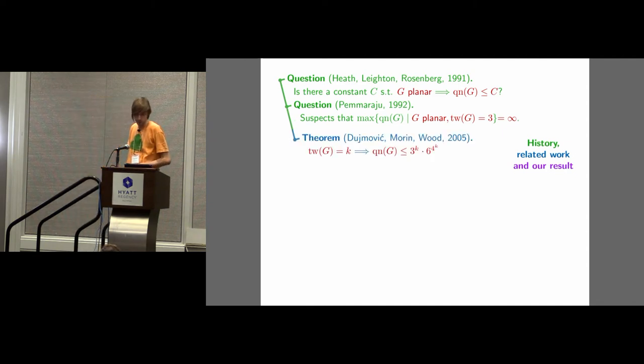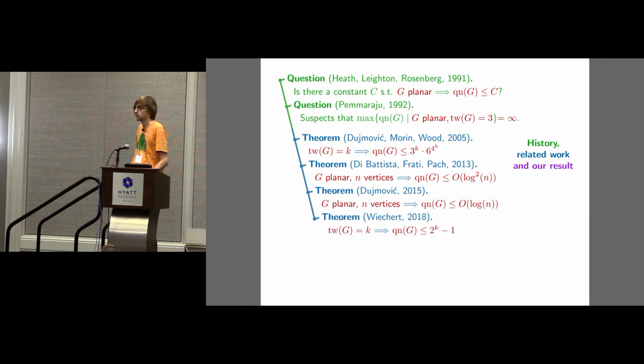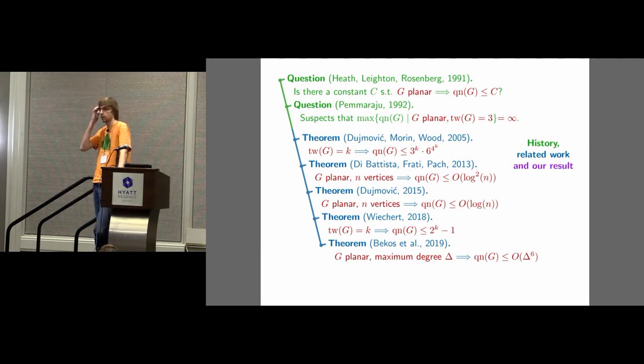Well, this has been refuted, because even without planarity, having small tree-width already bounds you to have a small Q number. The bound is doubly exponential, but still, for fixed tree-width K, the Q number is also a constant. For planar graphs, the best that has been known is in terms of the number of vertices, so there's these results from 2013 and 2015, where they get into polylog upper bounds. Then later, the tree-width bound was improved to be singly exponential.